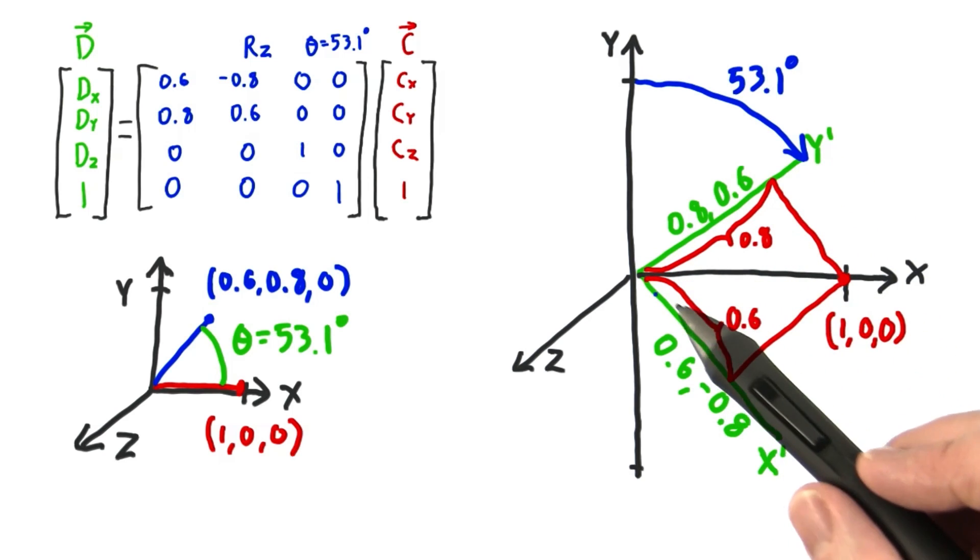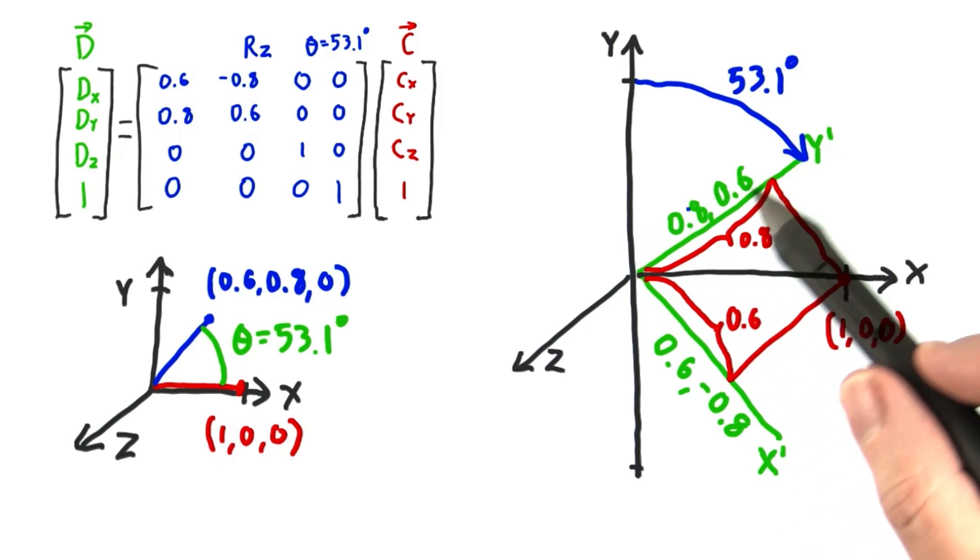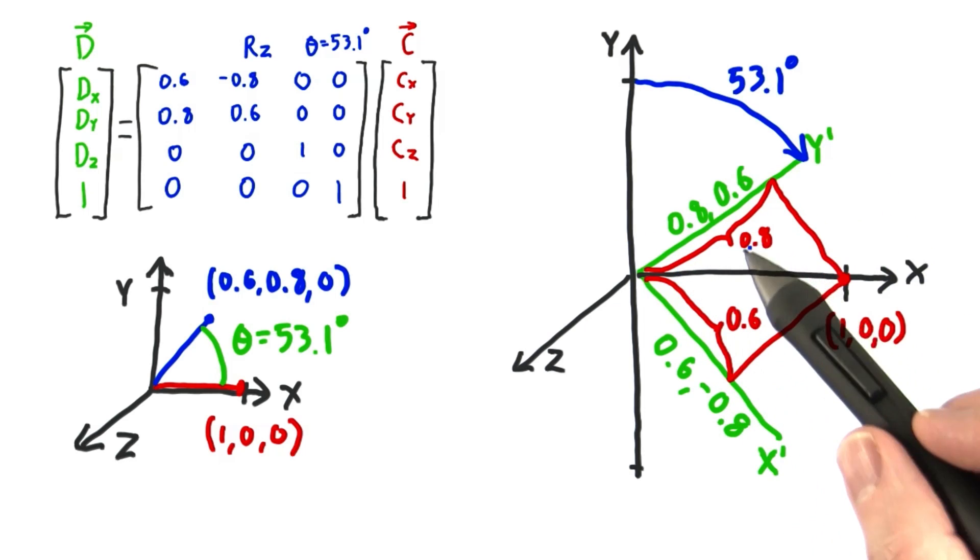For example, on our new x axis, the point's coordinate is 0.6. On our new y axis, the point's coordinate is 0.8.